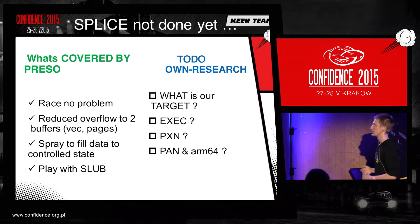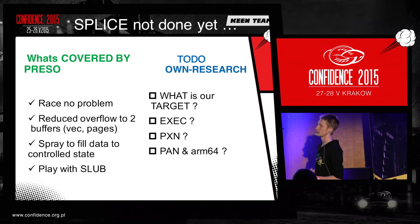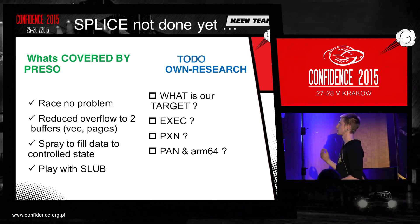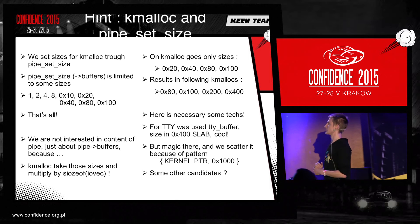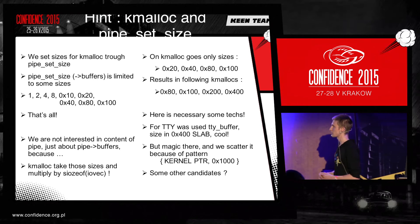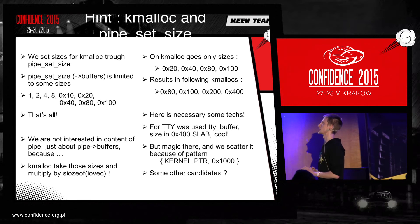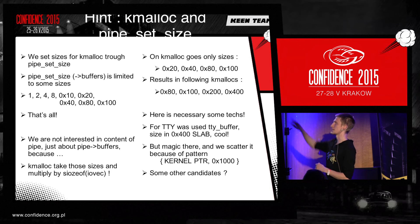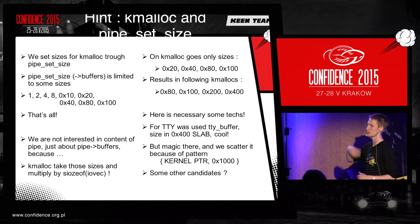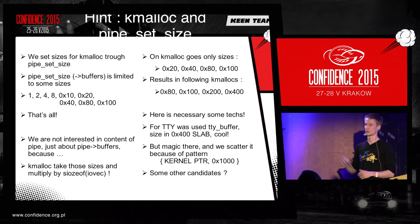On 64-bit devices, access mode prevention and execution mode prevention on user mode data will be enabled, so you need to play with these things. The limited scope is that you can overflow only to certain specified sizes: 16, 32, et cetera — multiplied by size of pointer. So you end up with a limited set of slabs you can use, and you need to find your target within those constraints.